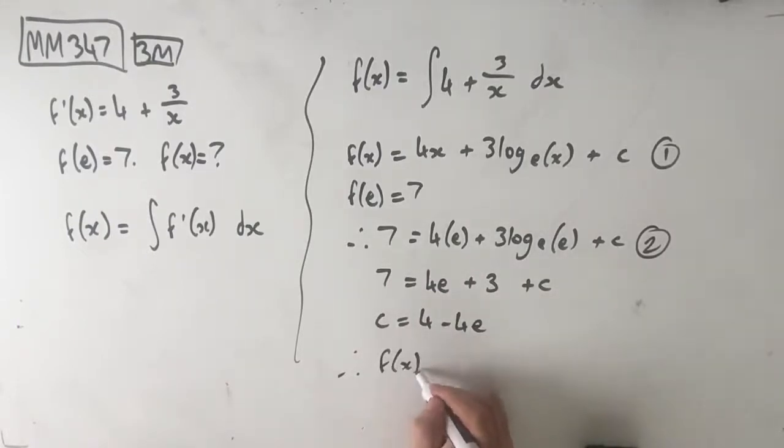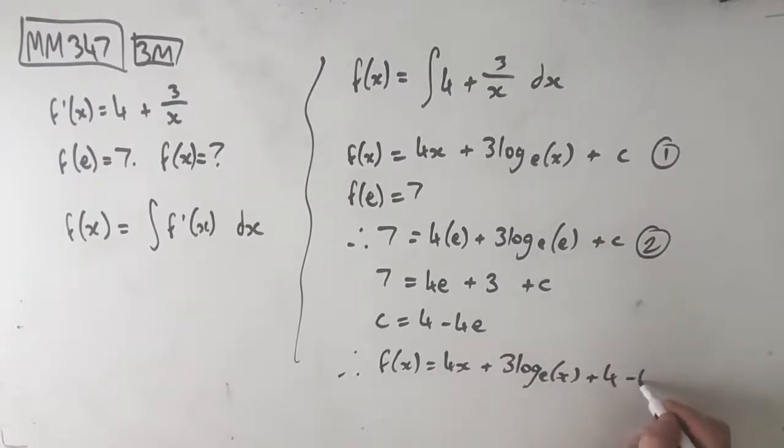So therefore, f of x is equal to 4x plus 3 log e of x plus 4 minus 4a, right? Because we've got that plus c on the end, and this is c. That's our third mark.